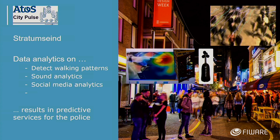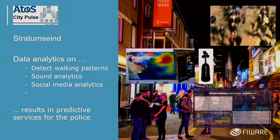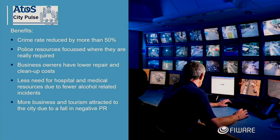Second, microphones doing sound analytics — not speech recognition, but sound analytics. Third, social media analytics: what's posted on Facebook and Twitter in relation to the street at that moment. Bringing this context information together and comparing it with historical data, the system is able, using artificial intelligence, to predict critical situations in the street — not only identify them, but predict them. This information is given to the police officer in the control room.